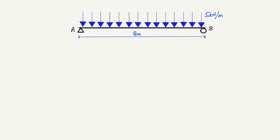We have a beam of length 8 meters with a uniformly distributed load of 5 kN per meter acting uniformly on this beam. Here at A we have a hinge support, which can take both the vertical reaction RA and horizontal reaction R_horizontal_A. However, R_horizontal_A is equal to zero because there is no horizontal load acting on this beam.